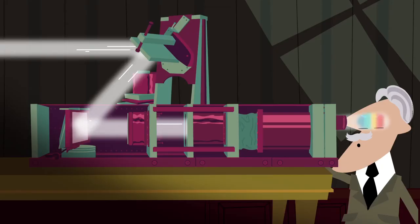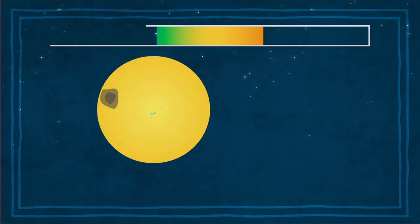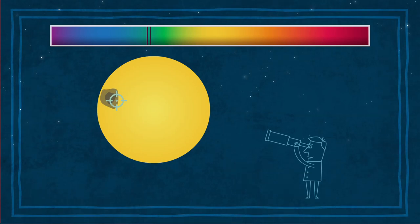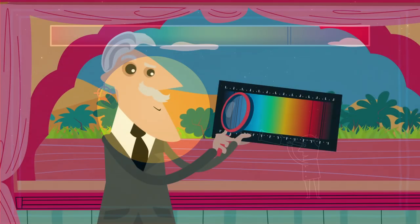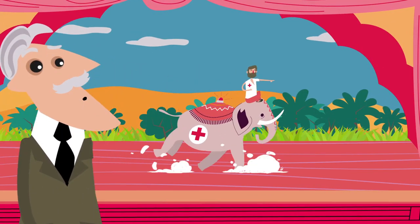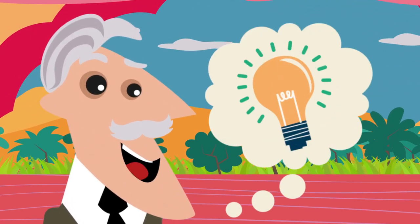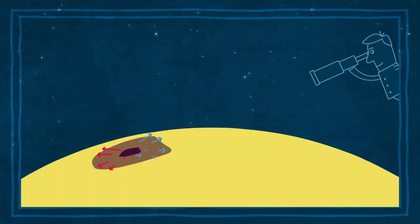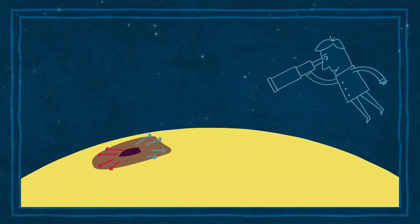Evershed bestimmte sorgfältig die Position der Spektrallinien im Licht von Sonnenflecken. Er sah, dass sie auf der uns zugewandten Seite der Penumbra blau verschoben sind und auf der gegenüberliegenden Seite rot verschoben. Evershed nutzte den Doppler-Effekt, um zu erklären, was er beobachtet hatte, und entdeckte so die Existenz von Gasbewegungen in der Penumbra. Heute nennen wir diese Bewegungen Evershed-Ströme.